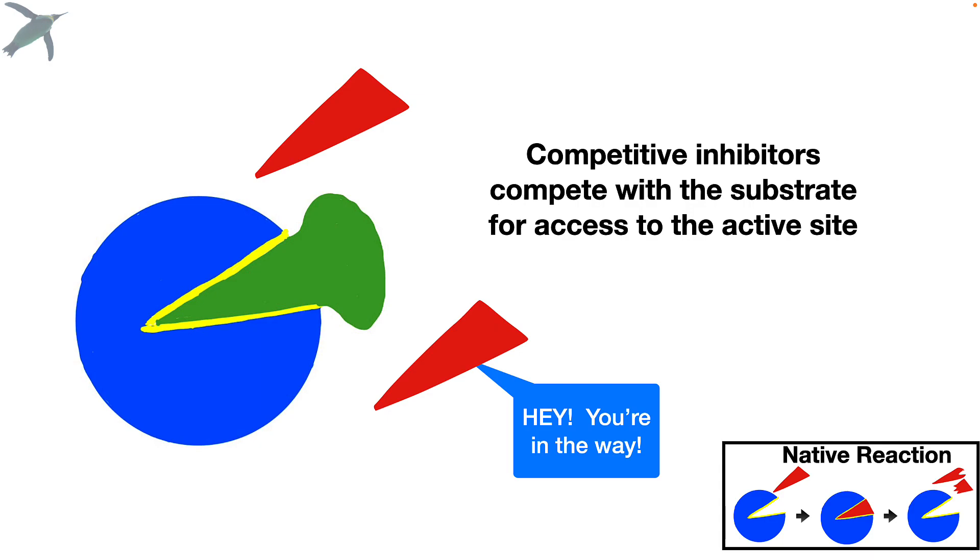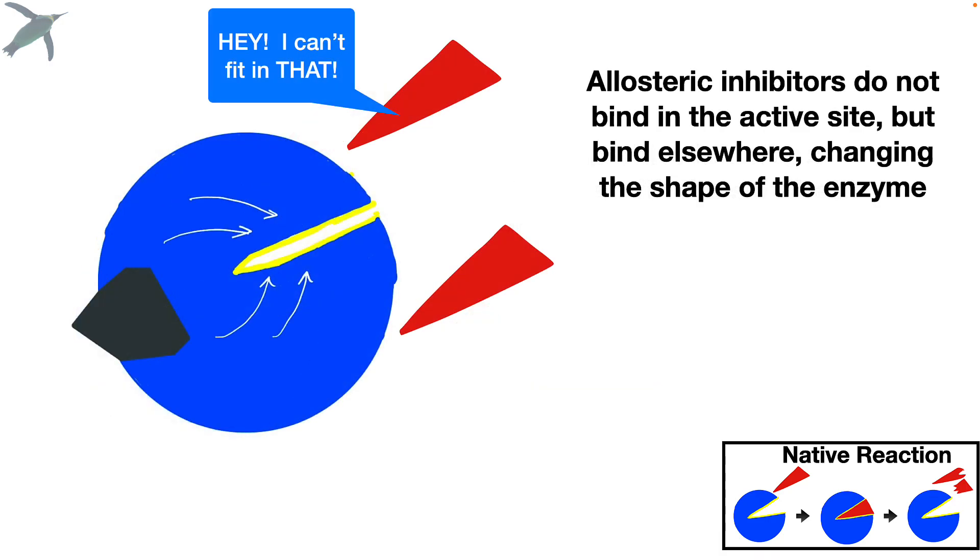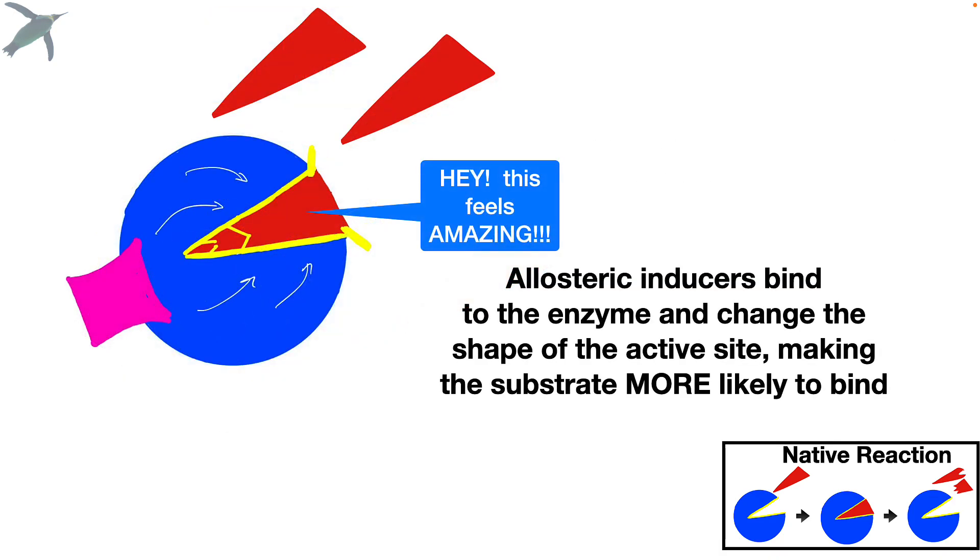So these are molecules that can change the shape of the enzyme, but they don't actually interact at the active site. So this is what we've got. We've got competitive inhibitors. Those will basically sit right there in the active site and block it. We have allosteric inhibitors, which do not bind on the active site, but they bind somewhere else. And they change the shape of the enzyme so that the substrate cannot fit. We also have allosteric inducers, which bind somewhere other than the active site. And they make the substrate more likely to bind. They increase that affinity.